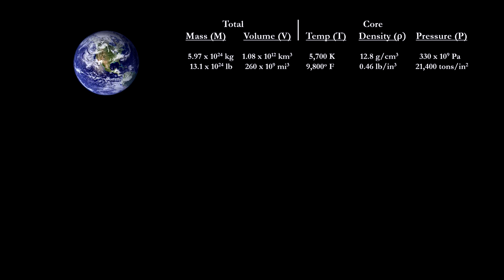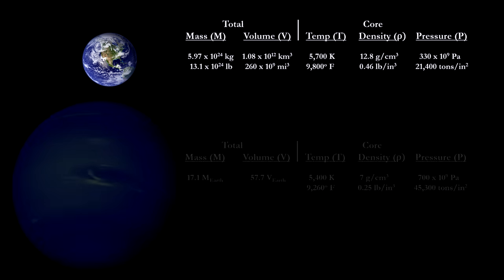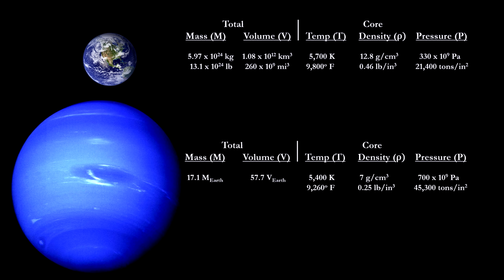There isn't another significant qualitative change in the relationship between pressure and gravity until we reach masses greater than 11 times the mass of the Earth. So we'll switch to giant gas planets like Neptune. It's 17 times more massive than the Earth but almost 60 times larger. Its core is less dense and cooler, but it has more than twice the pressure.